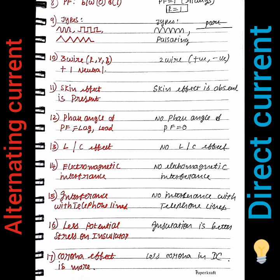In DC, there is less potential stress on the insulator, making insulation better for DC transmission. In AC, the insulation is comparatively poor due to higher potential stress.